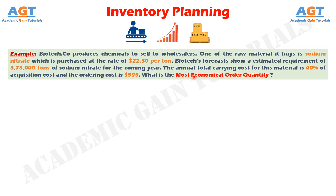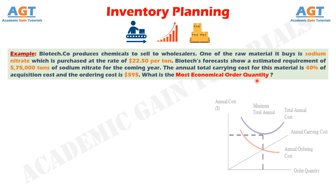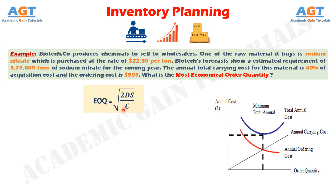We have to find out: what is the most economical order quantity? The Economic Order Quantity, EOQ, is the ideal order quantity a company should purchase to minimize inventory costs such as holding costs, shortage costs, and order costs.